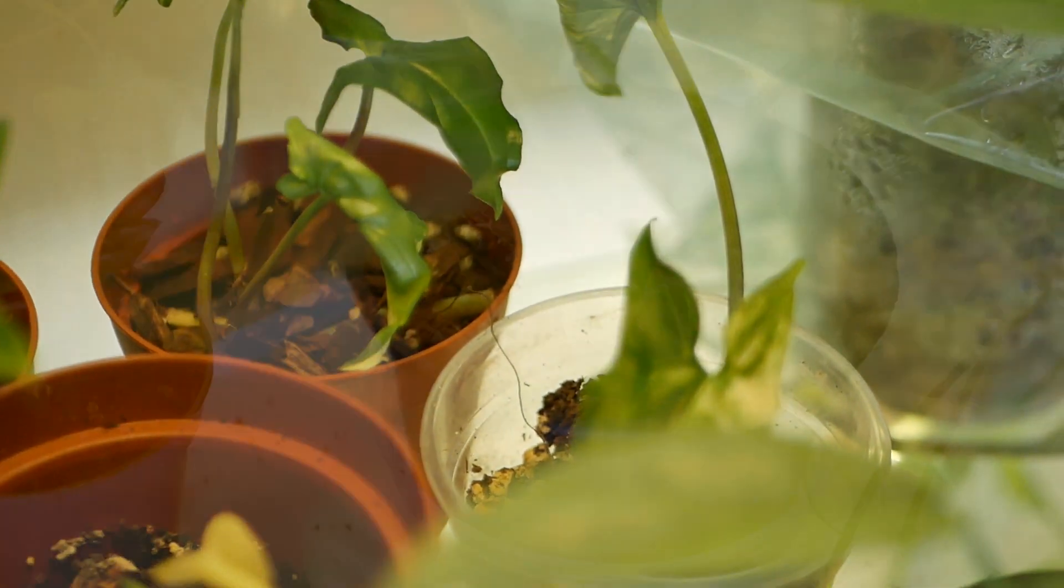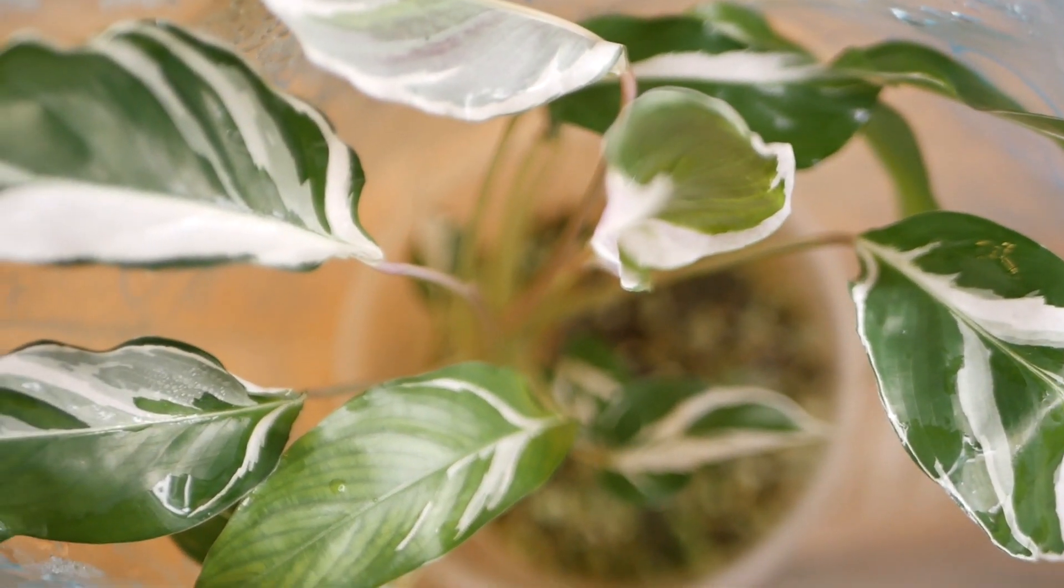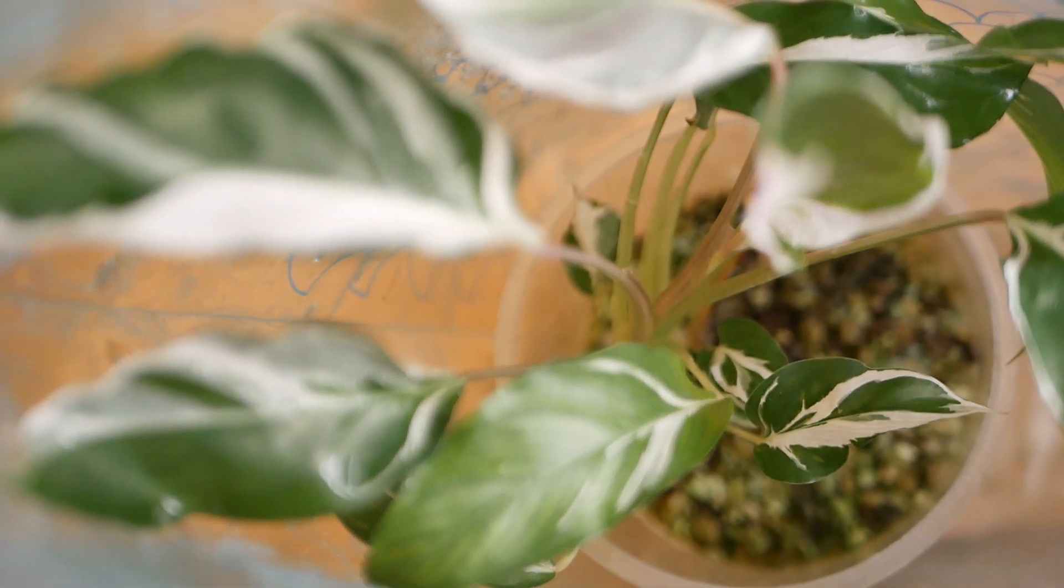Then we have another silver blue pothos and right next to it a ripsalus. In the ziploc bag there is my galathea white fusion.